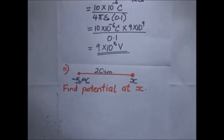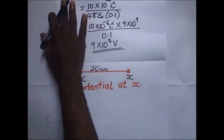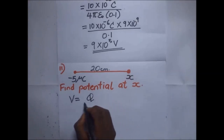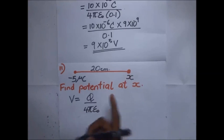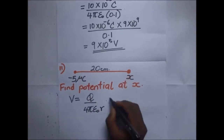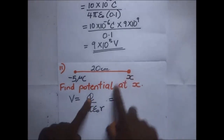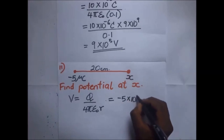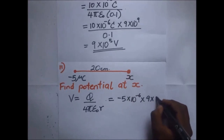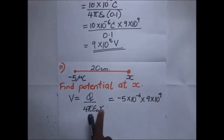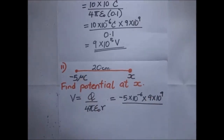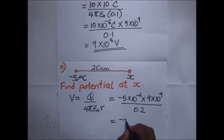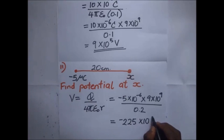In the next example, the charge is negative — find the potential at x. V equals q over 4πε₀r. Our value of q is negative 5×10⁻⁶ coulombs, multiplied by the constant 9×10⁹, divided by r — the separation is 20 centimeters, converting to 0.2 meters. Our answer is negative 225×10³ volts.